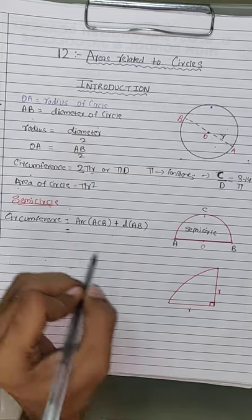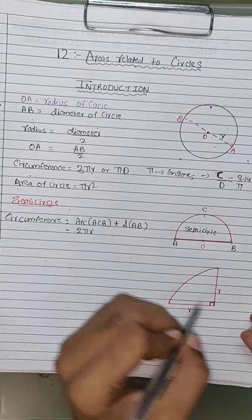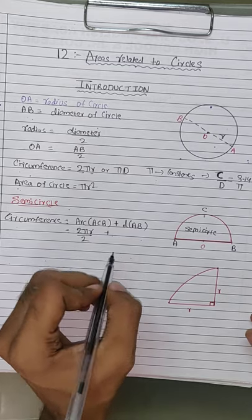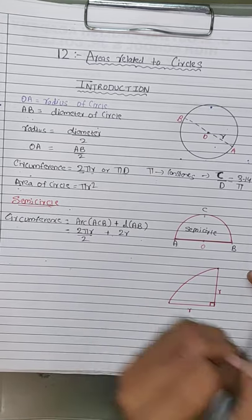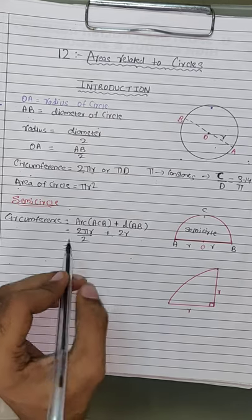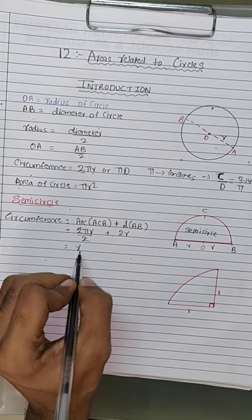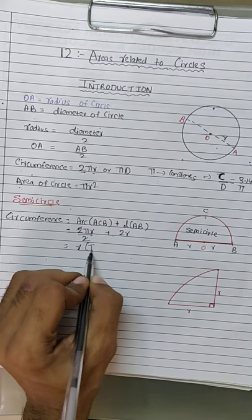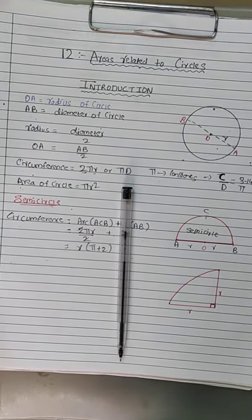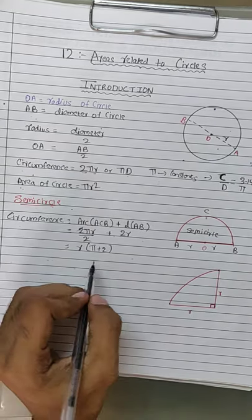Arc ACB is half of the full circle's circumference. Full circle circumference is 2πr, so half circle arc is 2πr/2. Adding the diameter, which is 2r, we get 2πr/2 + 2r. The 2s cancel in the arc term, giving us πr + 2r, which simplifies to r(π + 2). This is the circumference of your half circle.